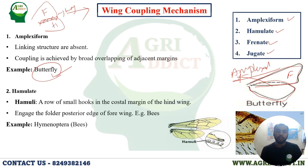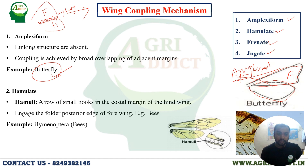If you catch a butterfly and try to separate the forewing and hindwing, it will be easy because there is no coupling structure. But if you try with a honeybee, you will face difficulty separating the forewing and hindwing because there are hook-like linking structures present.